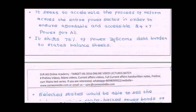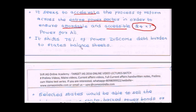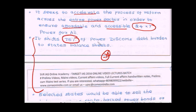The Ujwal Discom Assurance Yojana seeks to accelerate the process of reform across the entire power sector so that it can ensure affordable and accessible 24x7 power supply for all. An important prelims point: the scheme shifts 75% of the power discoms' debt into the state's balance sheet.